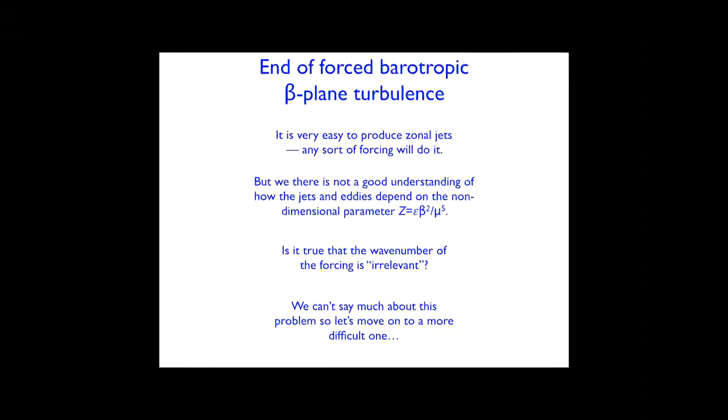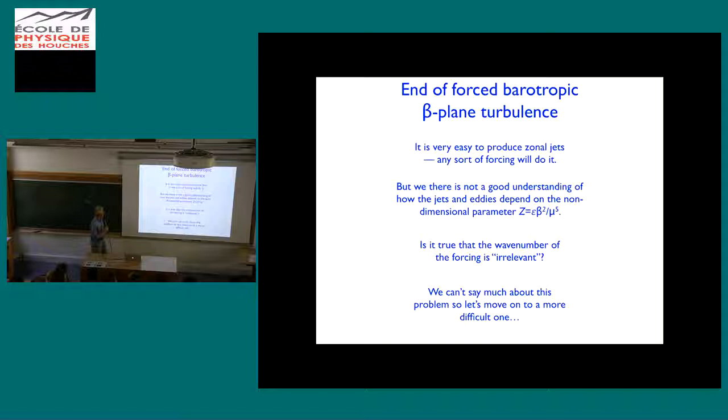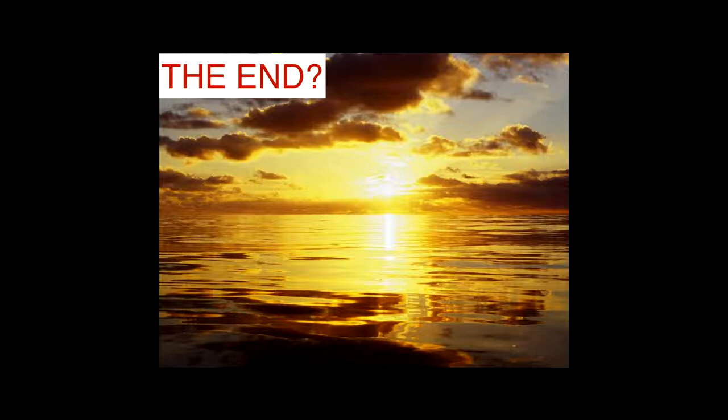So that's the end of what I wanted to say about forced beta plane turbulence. It's very easy to produce zonal jets, any sort of forcing will do it. I don't think we have a good understanding on how the jets and eddies depend on this non-dimensional parameter, or even if that's the only non-dimensional parameter that's important. I don't think so, because I believe in the small z regime, the length scale of the forcing is not irrelevant at all, which is what I'm saying here. And then rather than continue with this, if I was going to give another lecture, I'd talk about a more difficult problem, but I'm not, so that's the end. Thank you.